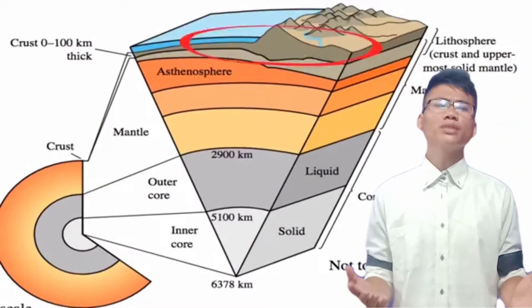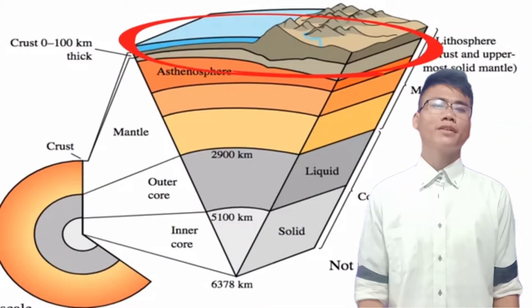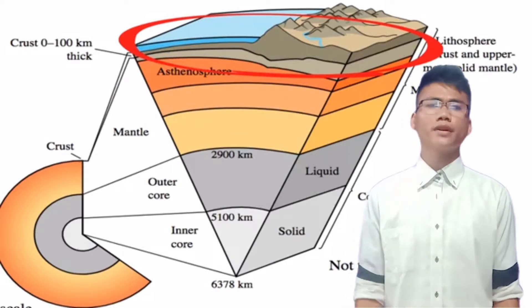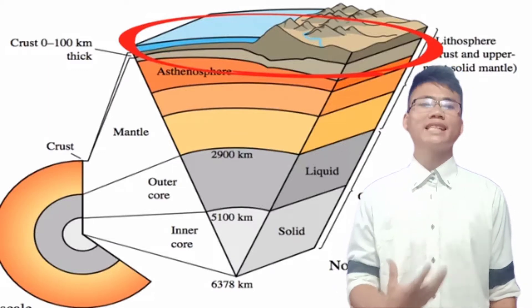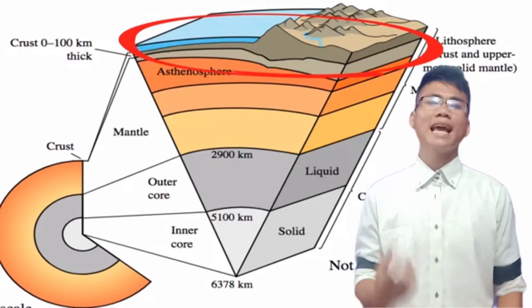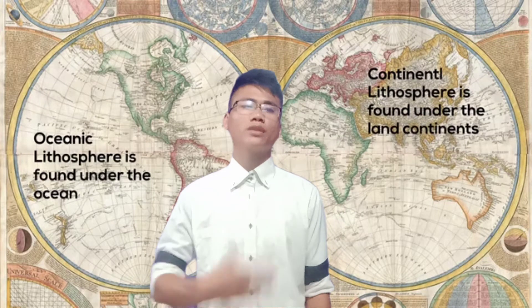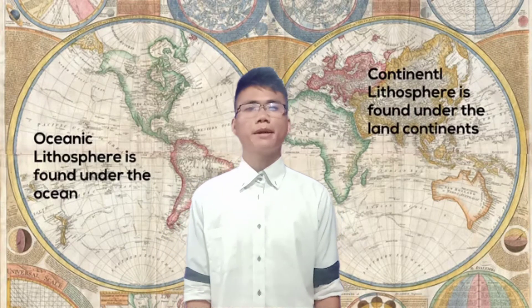You will notice in this picture that the Lettosphere is the top layer of the Earth, because the Earth consists of land and water. The Lettosphere can be subdivided into Oceanic Lettosphere and the Continental Lettosphere.